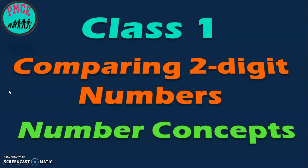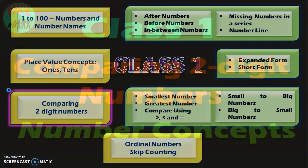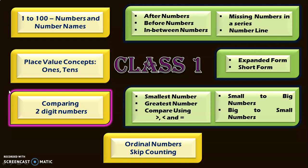This is one of the learning outcomes in Class 1 under number concepts. In the first video for Class 1, we saw writing numbers from 1 to 100 in series with the number names. In the second video, we saw the topics under this particular learning outcome: writing the after numbers, before numbers, between numbers, missing numbers in a series, and number line concepts.